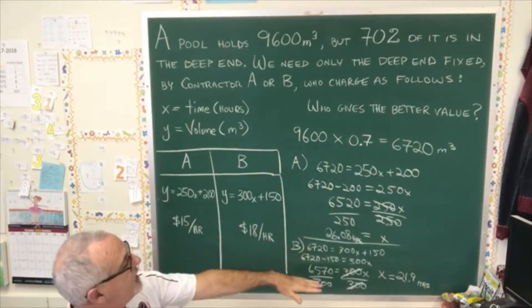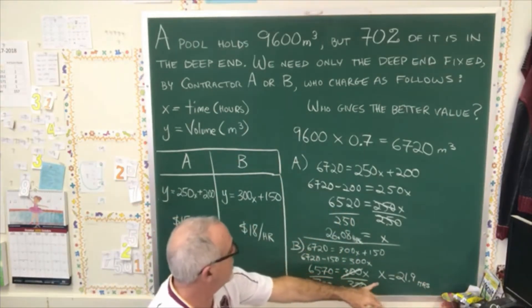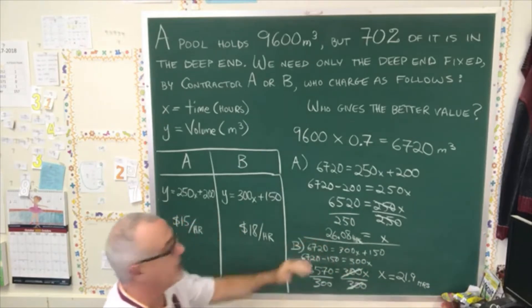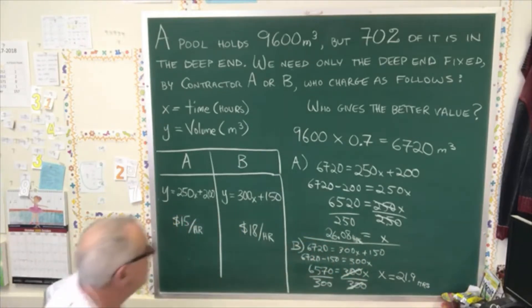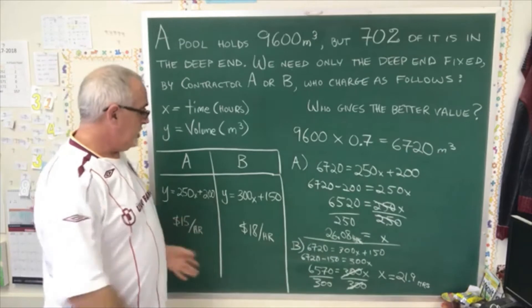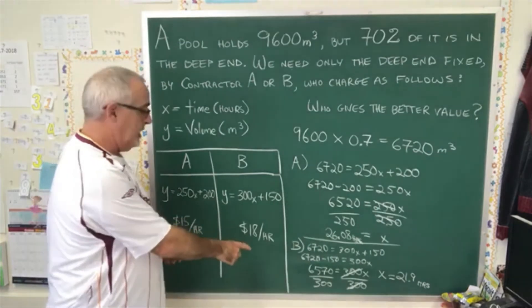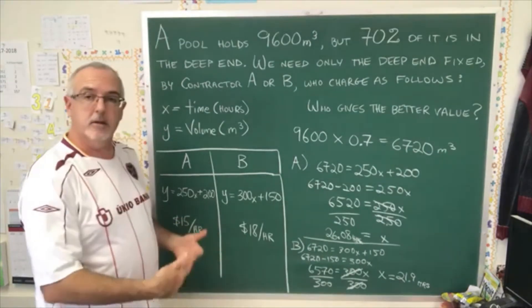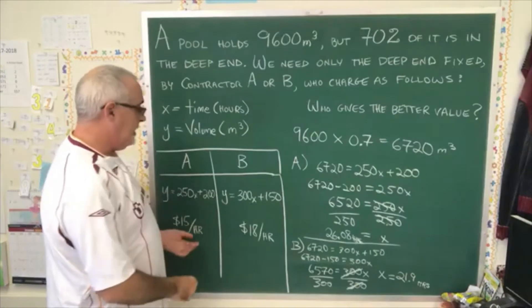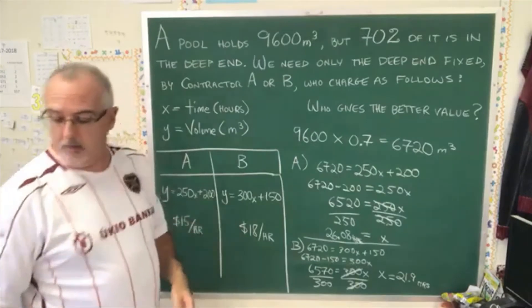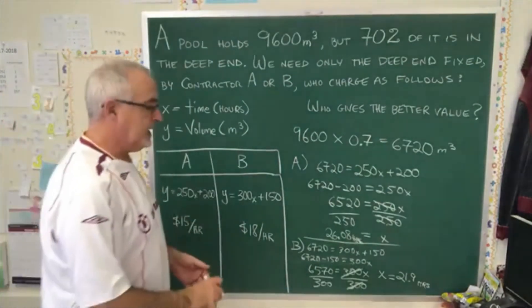Well, we can see that it's taking contractor B less time than contractor A, but that doesn't give us the answer to the question because they also give us the salary that the contractors are making. A is earning $15 an hour, B is earning $18 an hour, so we have yet another one of those extra steps.